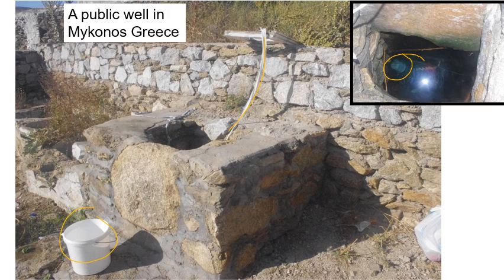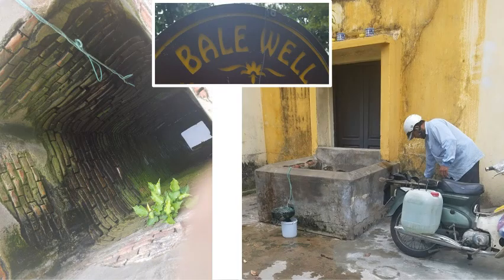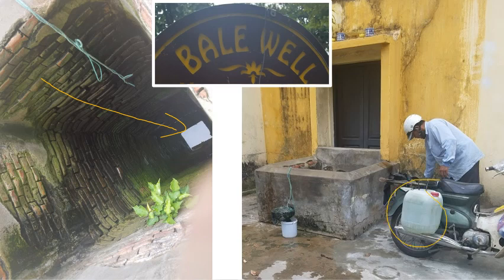Wells are still used today to get drinking water. This well in Vietnam is still used today — it's just a long, deep pit dug into the ground until they reached the water table. While standing there, a man came up on a motorbike and took water from the well. There's a belief that the water from this particular well gives the noodles cooked in local ramen shops a particular flavor, so local restaurants still come here to get their water.